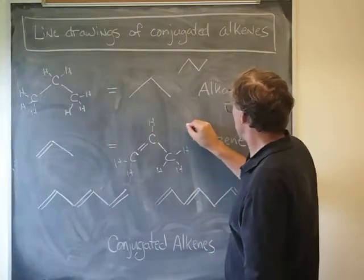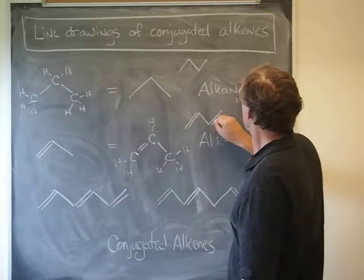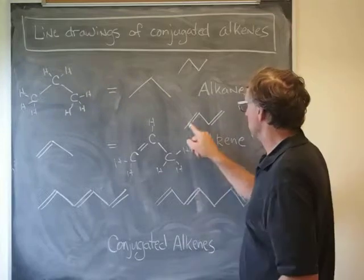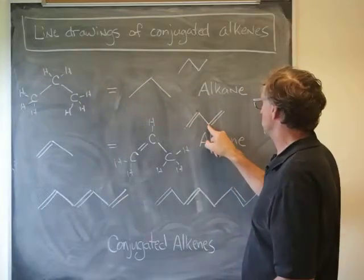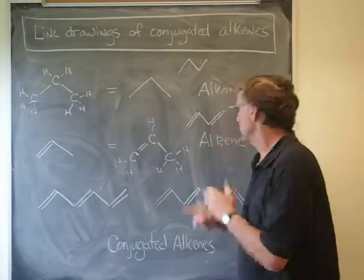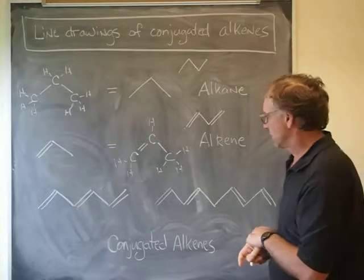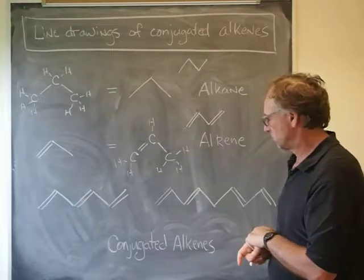Another alkene could be written like this — something like that. That would be one, two, three, four carbons, and that would be called a variant of a butene.